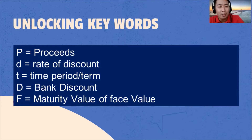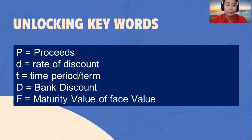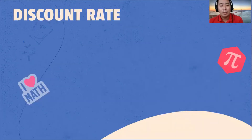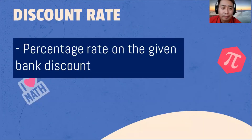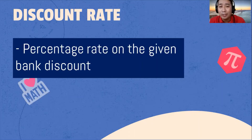T is for time period — that means the duration of the payment. D is for the bank discount. Then F is the maturity value or face value. Discount rate is a percentage rate on the given bank discount.